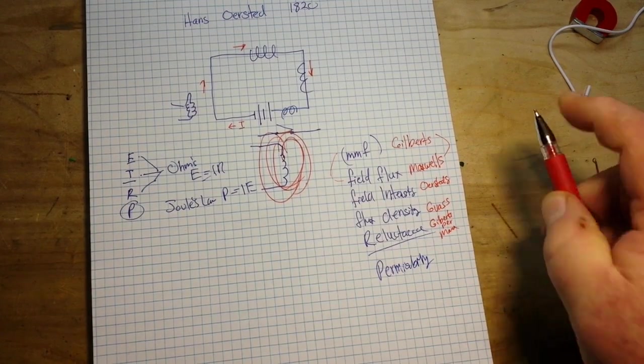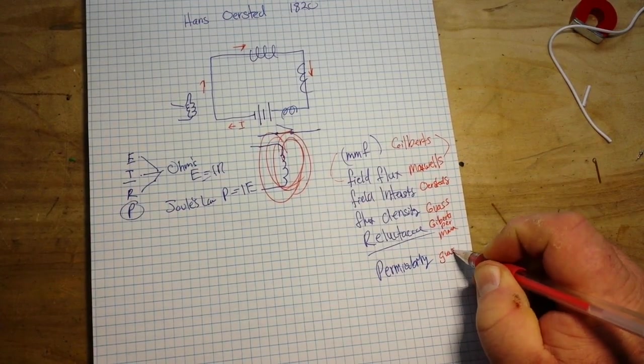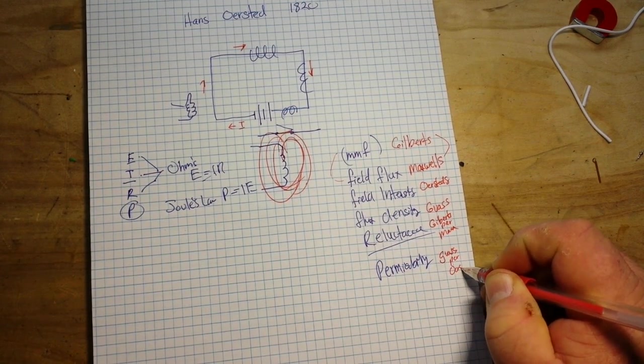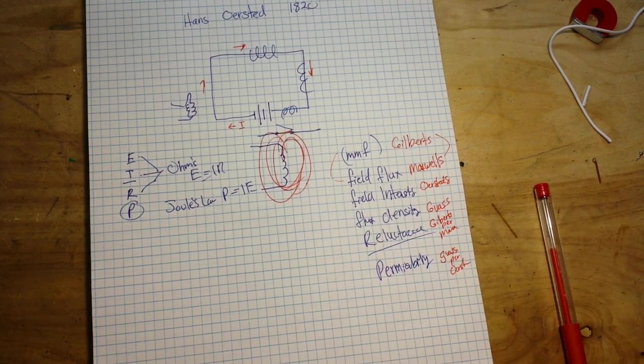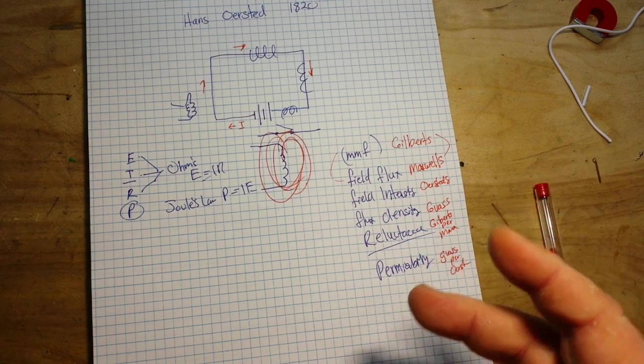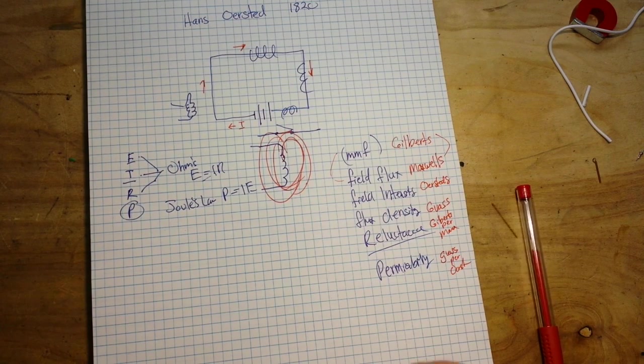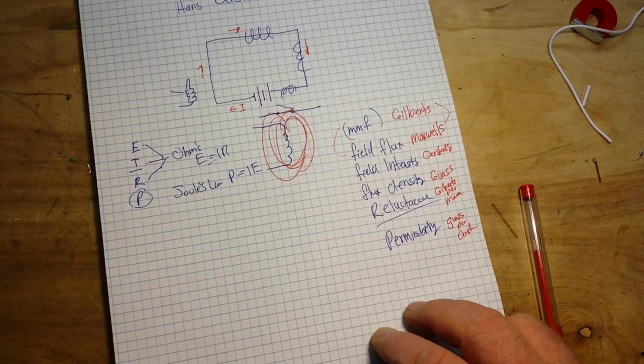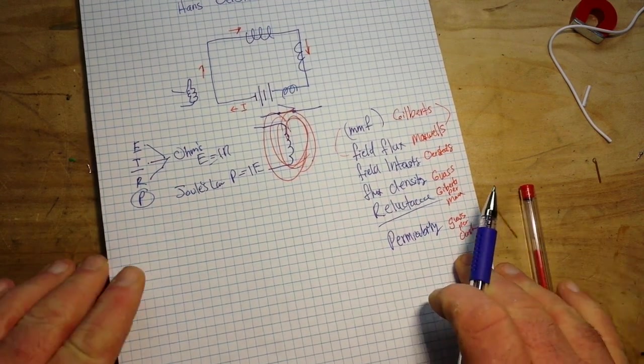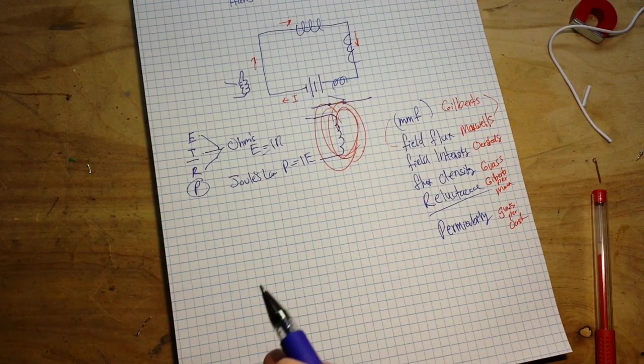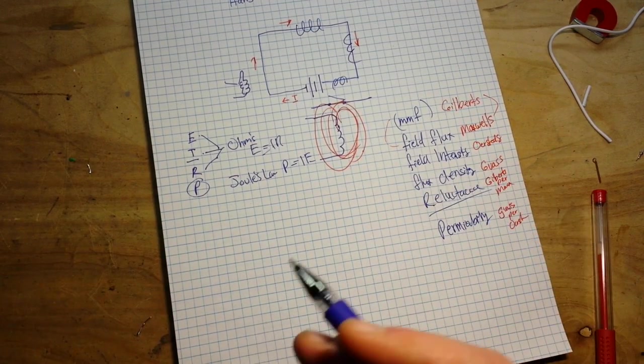Permeability is gauss per oersted. And while this may seem daunting, like there's just so much stuff going on here, it's really more of the same thing. And if we want to compare Ohm's law for electric and magnetic circuits.